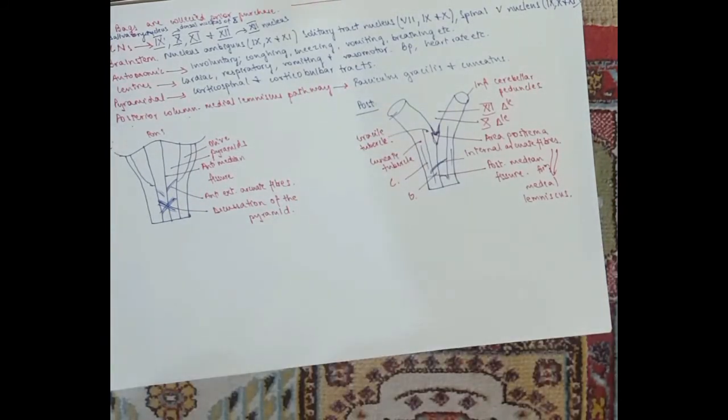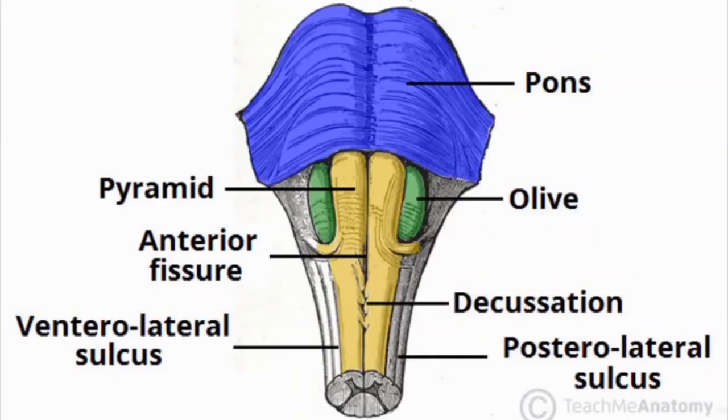And that is it about the picture of the medulla. So you can see the pons above and the spinal cord starts from below the medulla. You can see the olives, the pyramid, the anterior median fissure. The decussation of the pyramid is very important. And yeah, that's how it looks.